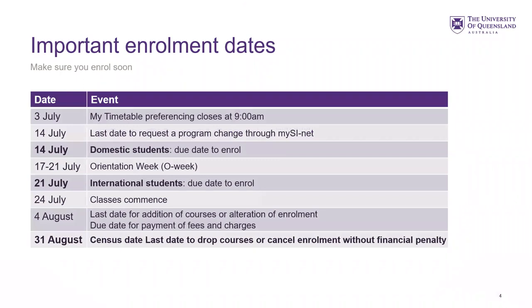So important enrollment dates. Timetabling preferencing is now open and it will shut on the 3rd of July, so please make sure you do your timetable preferencing before then. On the 14th of July, it's the last date to request a program change through MySignet. It's also the domestic student's due date to enrol.